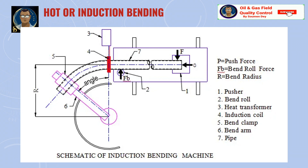Induction bends are normally produced in standard bend angles of 45 degrees, 90 degrees, etc. However, depending on the requirement, they can be customized to a specific bend angle. Compound out-of-plane bends in a single joint of pipe can also be produced. The bend radius for induction bending is specified as a function of the nominal pipe diameter D, like 5D, 30D, 60D bends, etc.